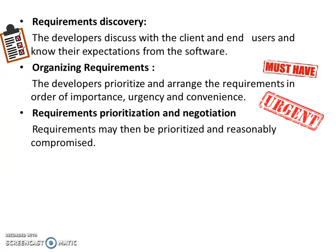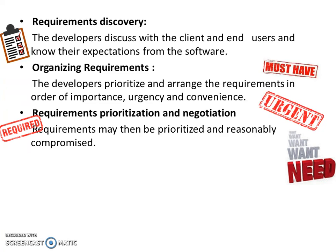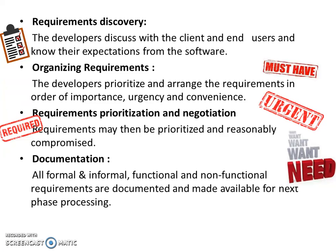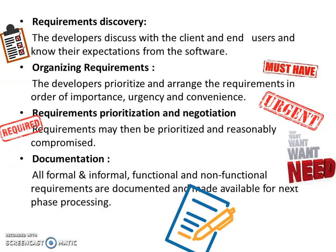In requirements prioritization and negotiation, requirements may be prioritized and reasonably compromised. Some requirements clash with each other, and such requirements may be given priority according to which one is more important, which one is needed and which one you would prefer. All formal and informal functional and non-functional requirements are then documented and made available for the next phase of processing.